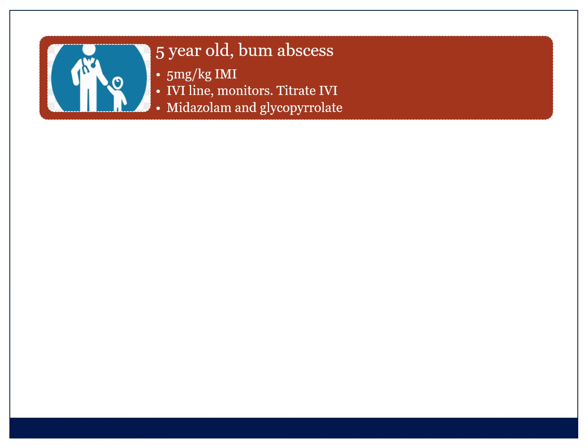For a five-year-old with a gluteal abscess who is crying and uncooperative with no IV access, what I'll sometimes do is sneak up and give the child an IM injection of five milligrams per kilogram. The mother can hold the child until you can get monitors on, insert an IV line, and then titrate intravenously after that. I often still give a bit of midazolam and glycopyrrolate as my first doses, followed by low doses of ketamine — a pretty safe method for a stable pediatric patient in the district hospital.